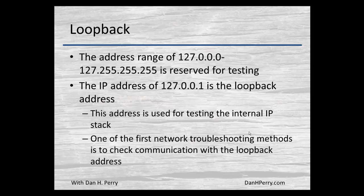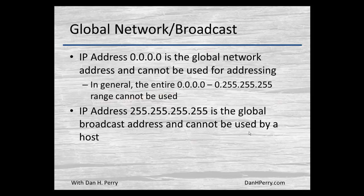Part of the reason the entire range was reserved for that was back when they were creating the rules, there was no thought of everybody being on TCP/IP. So they said, we can leave a whole large class A range just for testing purposes because we're never going to run out of IP addresses — well, guess what, we are.